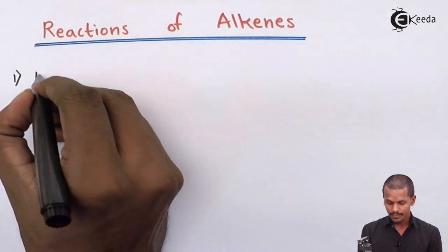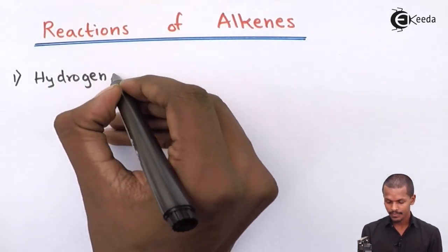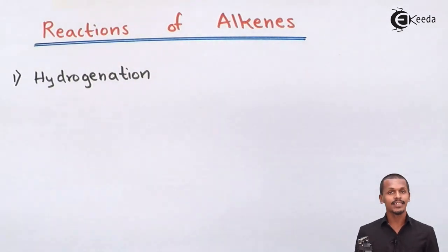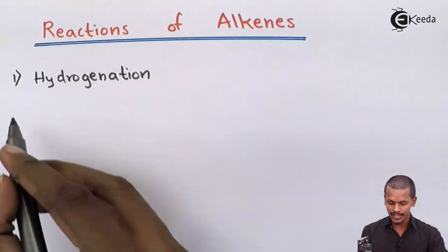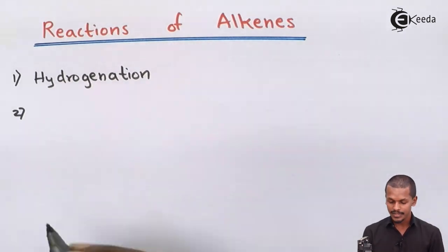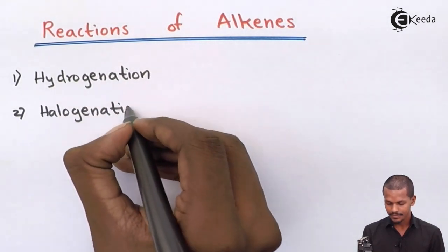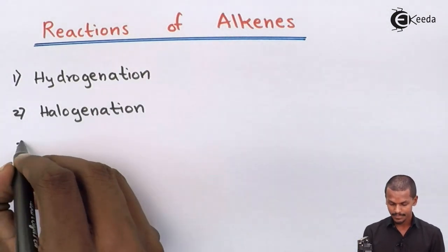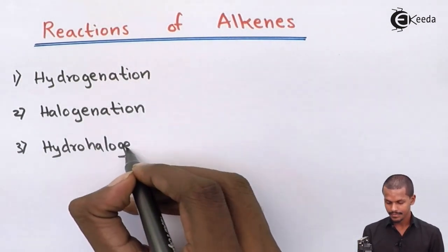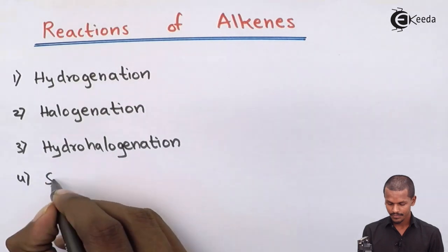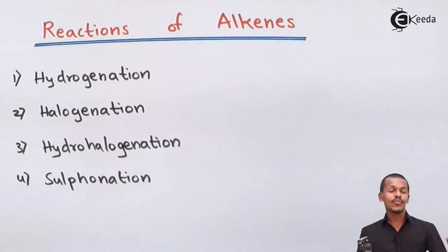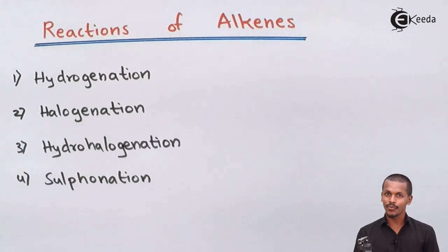Starting with the first one: hydrogenation — the introduction of hydrogen molecules into the carbon-carbon double bond of the alkene. The second is halogenation, the third is hydrohalogenation, and the fourth is sulphonation — the reaction of alkene with sulphuric acid.